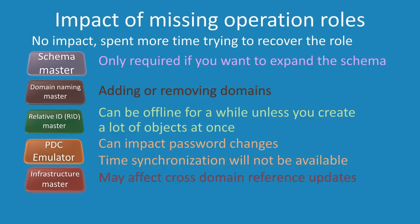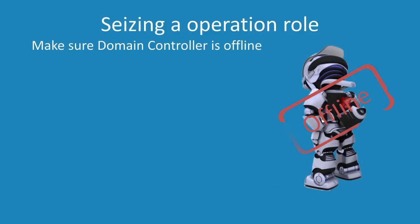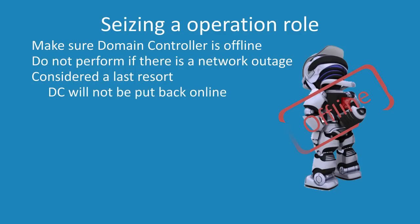Once you understand the impact the missing operational master role will have on your organization, you can decide how much time you should wait before seizing the role. Before seizing the role you should make sure the domain controller is offline. Seizing a role should not be performed if you have a network outage and your network is divided in half. Seizing an operational master role is considered a last resort when the domain controller is offline and will not be brought back online ever again.